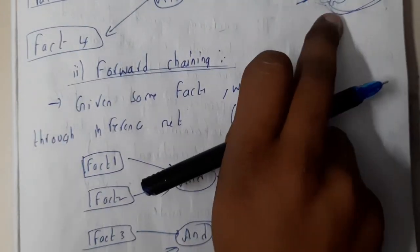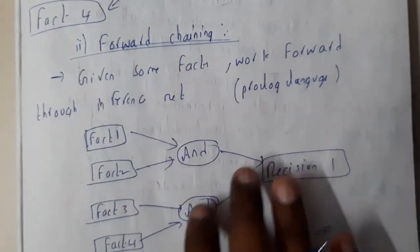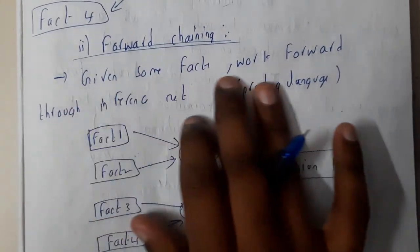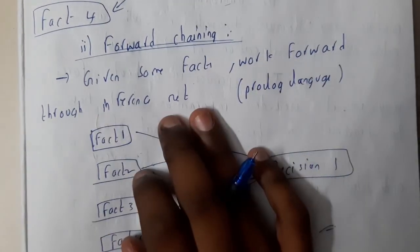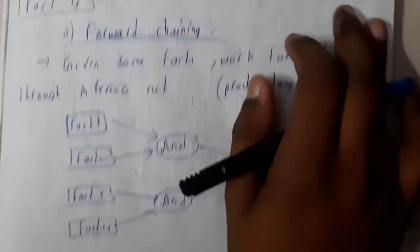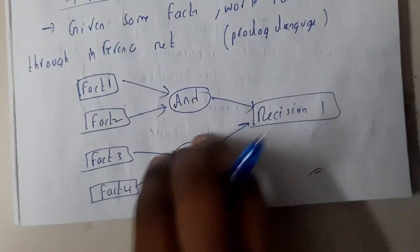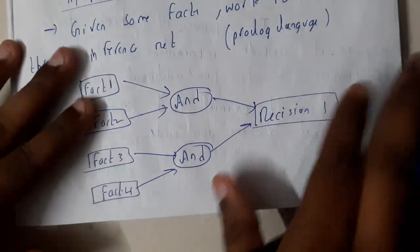I told you from decision you'll be going up, whereas forward is nothing but opposite. You give some facts, work forward, and you will be getting your result. So I hope everyone got a small idea. This is observed in your Prolog language, which is one of the most important languages for your programming of AI.